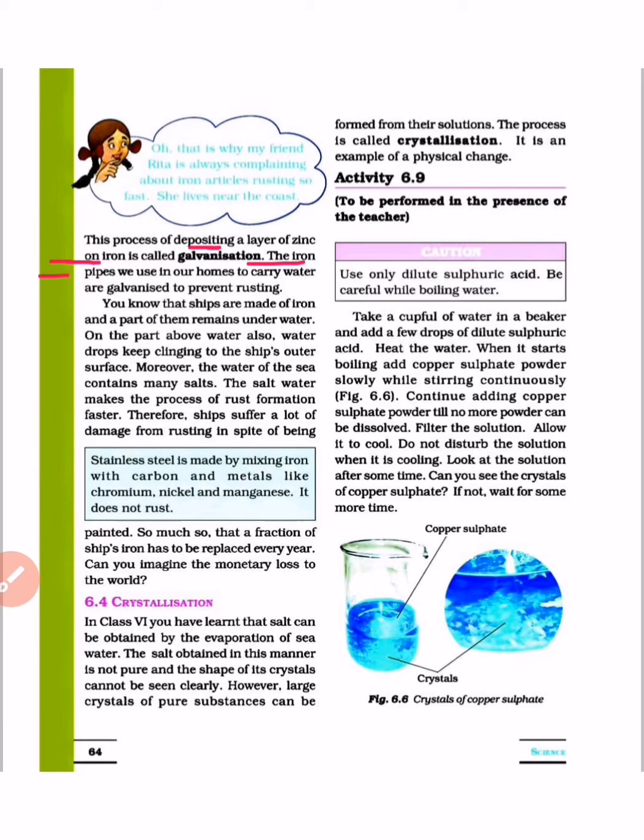The iron pipes we use in our home to carry water are galvanized to prevent rusting. The water pipes in your home are galvanized, meaning zinc layer is provided on iron.